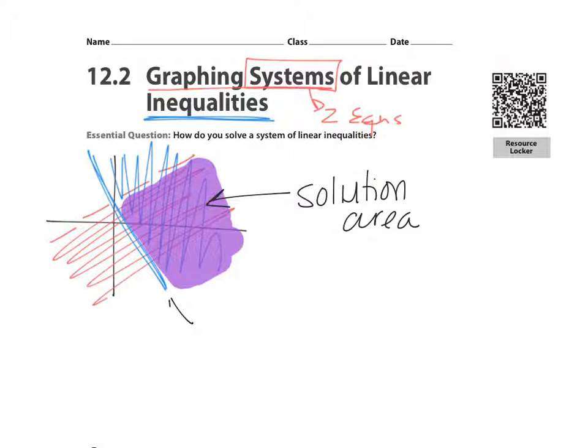Also points that are on this line, on the line, are solutions if the line is solid. Points on the dashed line are not solutions because they're on the dashed lines. They're not included. So you need to know those things before we move forward. We're going to do two examples.